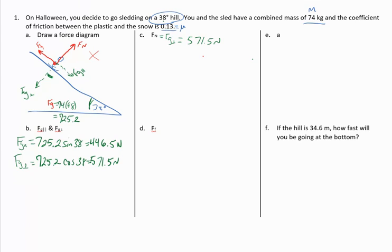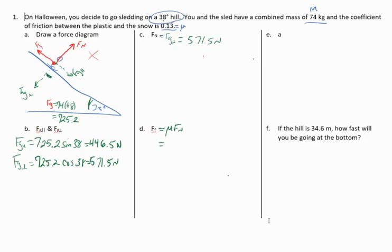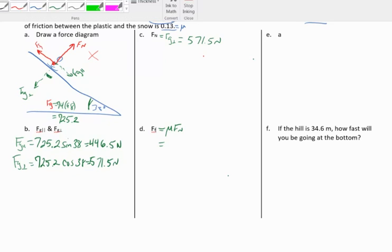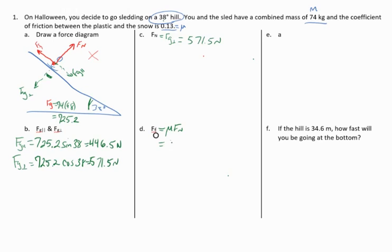Now, why do we have to know the normal force? We have to know the normal force because when we go to calculate the force of friction, it is mu times the force normal. So I can take the coefficient of friction 0.13 times the normal force that we just found, which will be the 571.5. And that'll give us a force of friction of 74.3 Newtons. So now I know the force of friction, I know the normal force, I know the perpendicular. These essentially cancel out.